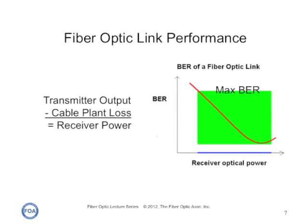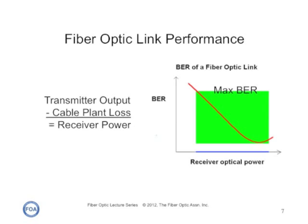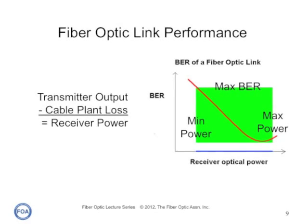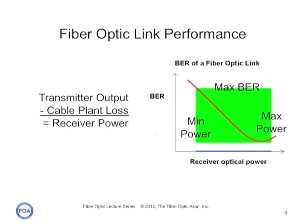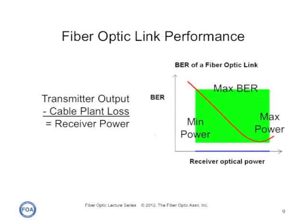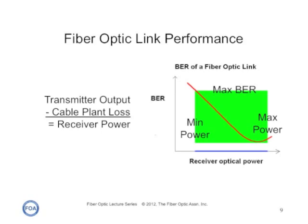The green square marks the operating range of the link. At the top, we have the maximum bit error rate that can be tolerated in that link — usually one bit per billion, or thereabouts. The left-hand side of the green square is the minimum optical power that provides an adequate bit error rate for the link, and as the power increases the bit error rate decreases and link performance gets better. The maximum power on the right-hand side of the green square is the maximum amount of power the receiver can tolerate before it begins getting overloaded or saturated. The transmitter output less the cable plant loss is what gives us the receiver power and determines how the link works.